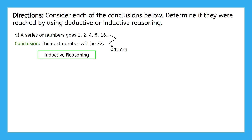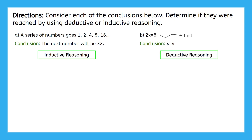There is no guarantee that 32 comes next. It makes sense, but our pattern could switch up after 16 — maybe it starts going backwards and rewinds to 8 again, then 4, then 2. Try part B on your own now. Did you catch that this conclusion came from deductive reasoning? We started with a definitive fact, not an observation or a pattern.